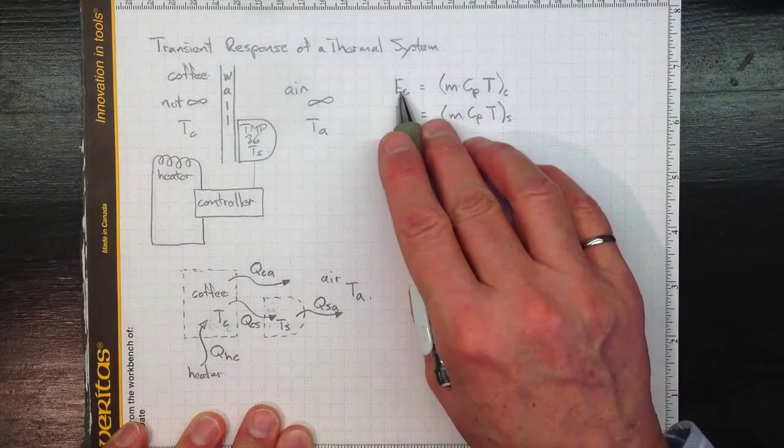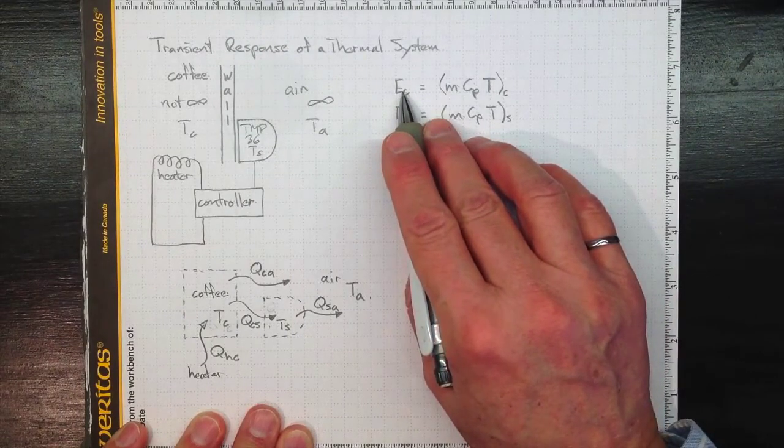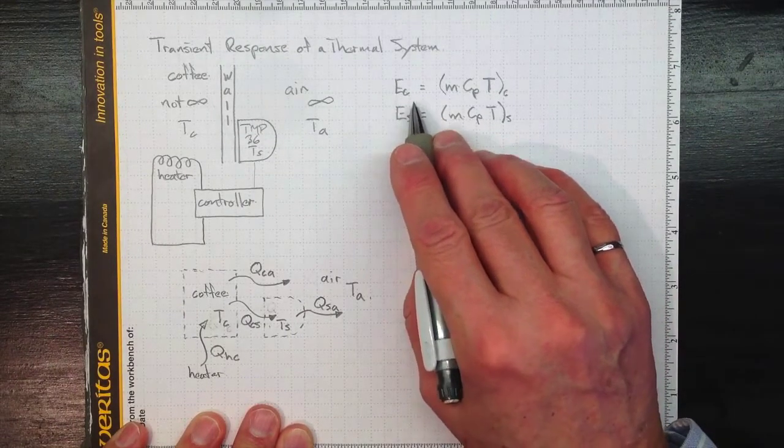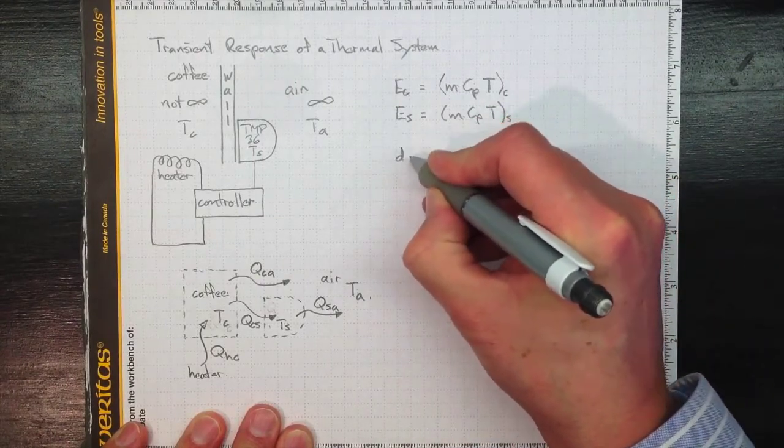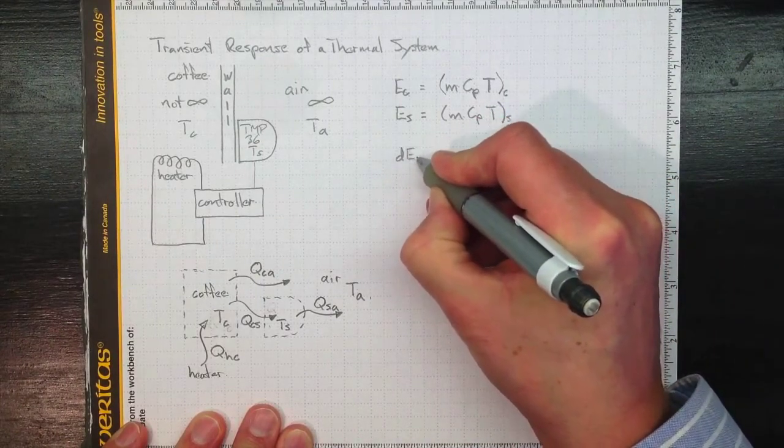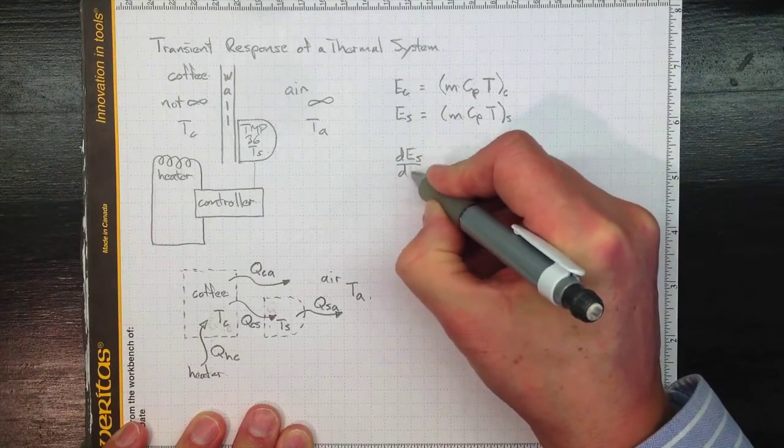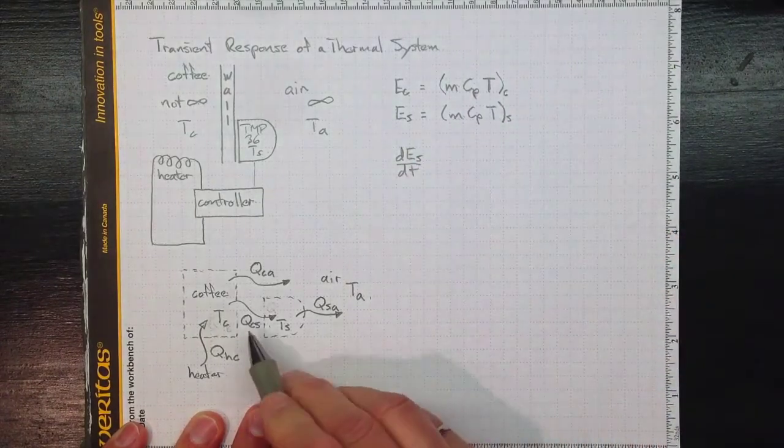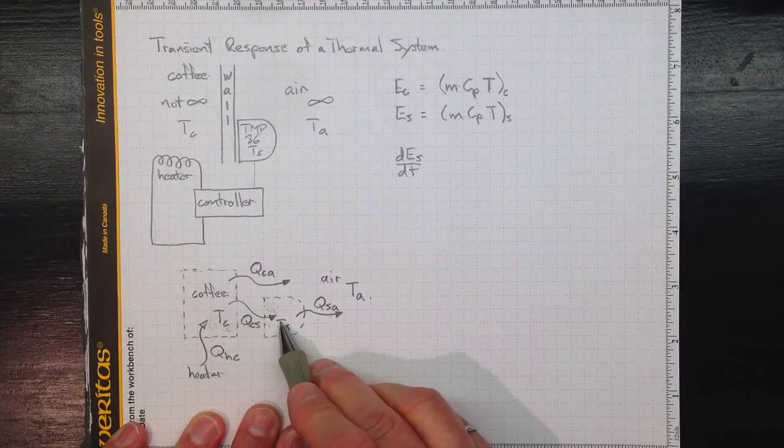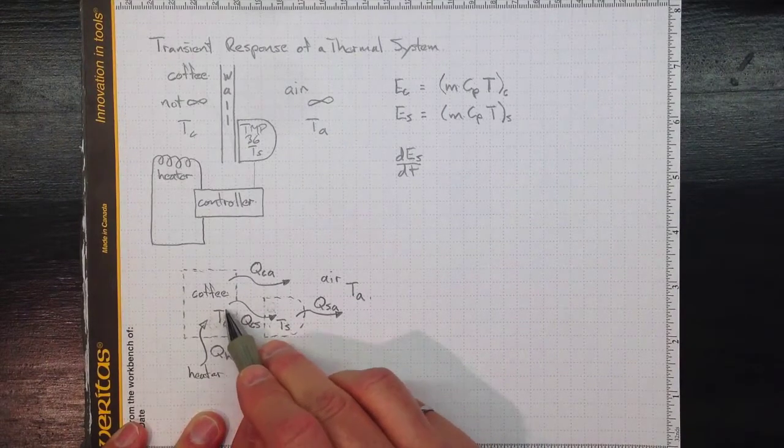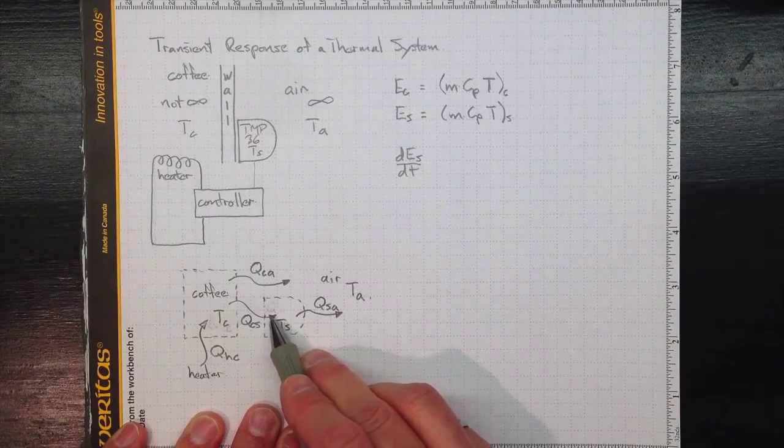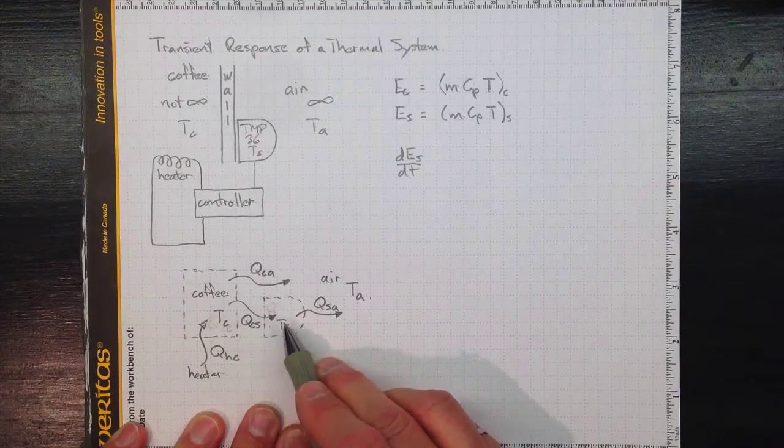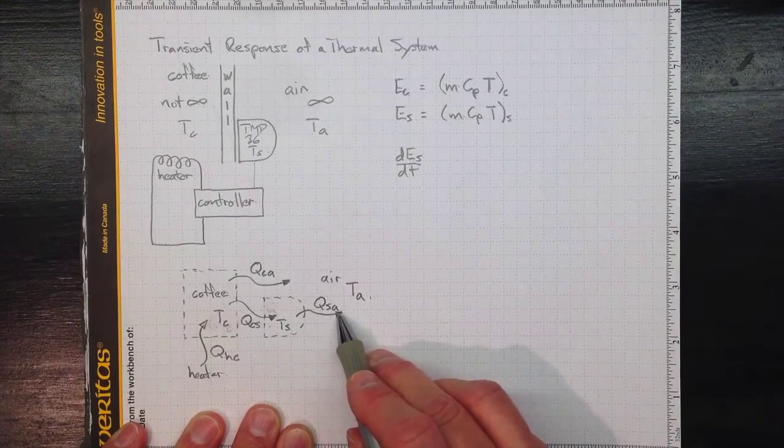So let's look at how would the energy in the coffee or the energy in the sensor change with time. Let's look at the sensor. The rate of change with time of the amount of energy in the sensor is just the energy coming into the sensor per unit time, that's Q_CS, the amount of energy per unit time, so this is in units of watts, coming into the sensor minus what's going out of the sensor.